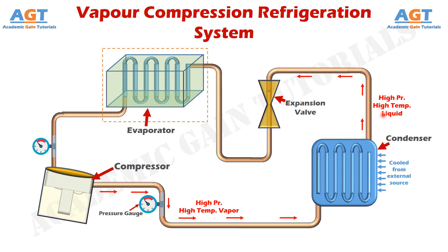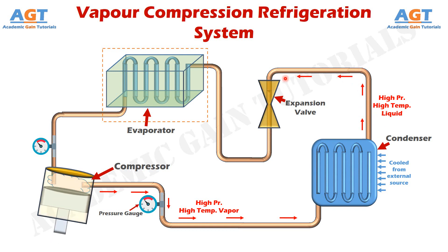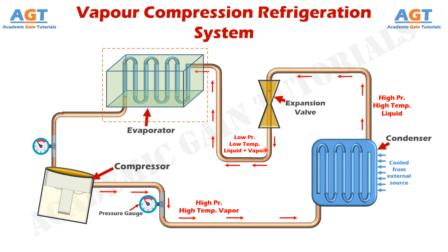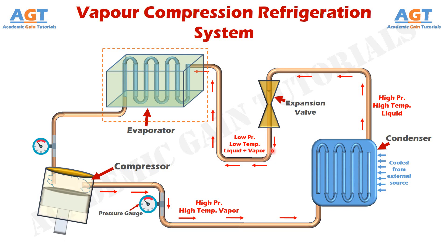This high pressure, high temperature liquid refrigerant leaves the condenser and passes through the expansion valve or throttle valve. The high pressure liquid refrigerant coming from the condenser is expanded inside this expansion valve. When expansion occurs, the pressure between the molecules decreases considerably, and thus the temperature falls. So, this high pressure liquid refrigerant is expanded into low pressure, low temperature liquid refrigerant. In practical use, we actually obtain a mixture of low pressure, low temperature liquid and vapor refrigerant — a very cold, chilled mixture coming out of the expansion valve.